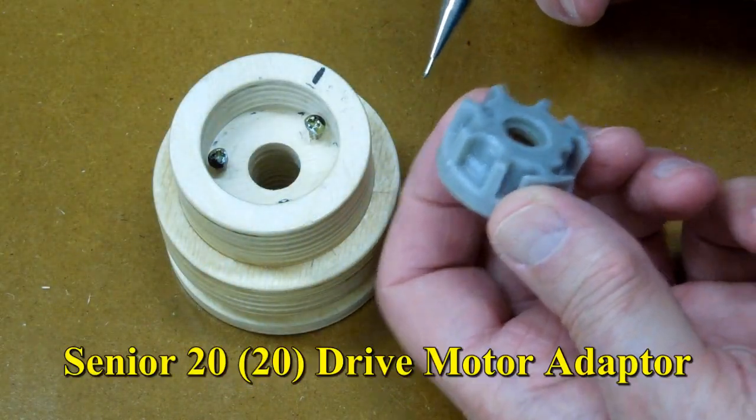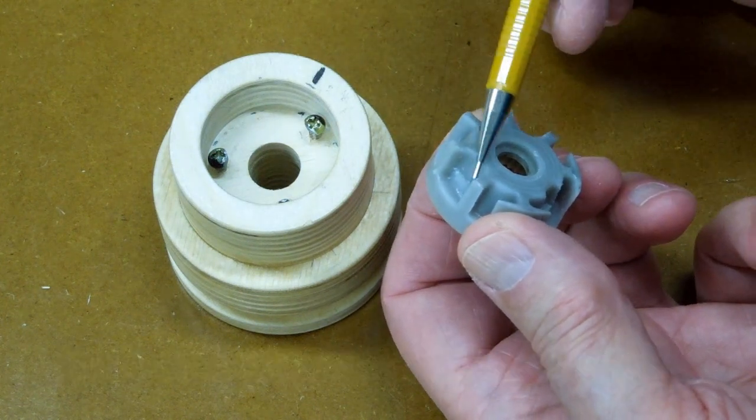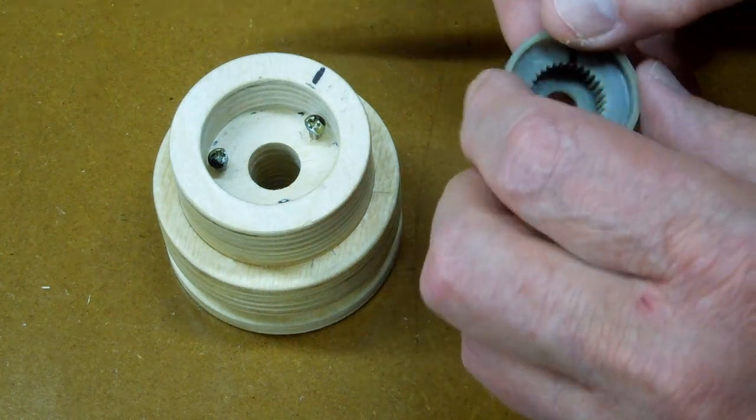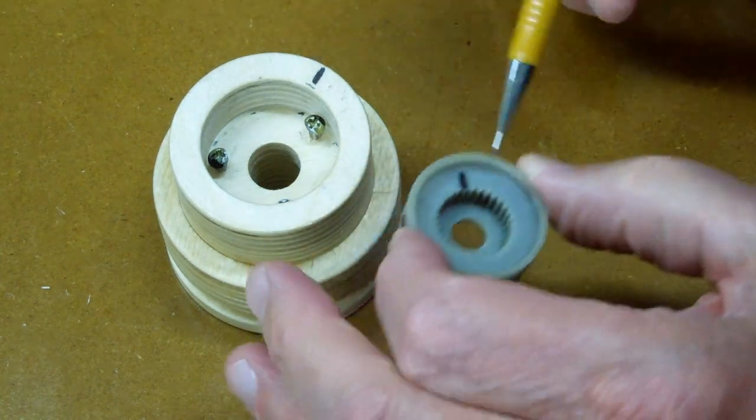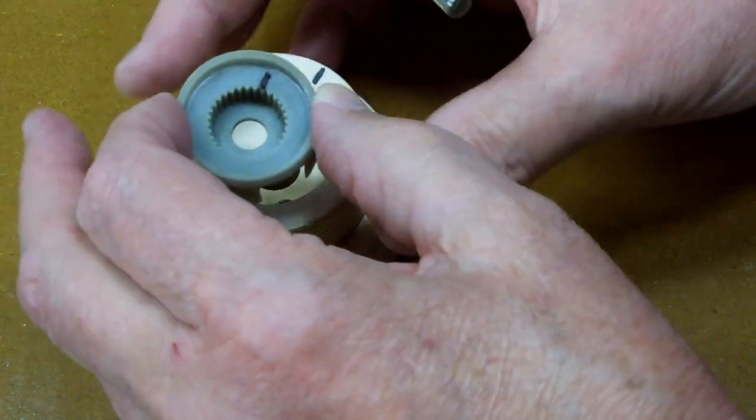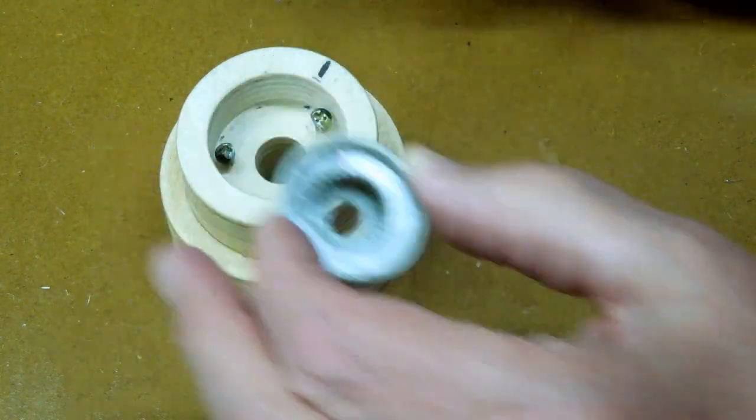In a previous video I reduced the original diameter of this part which opened up these pockets between these spokes. Now I made this part to match this and this will be the drive pulley for the motor. I need to be able to transfer torque between this part and this.